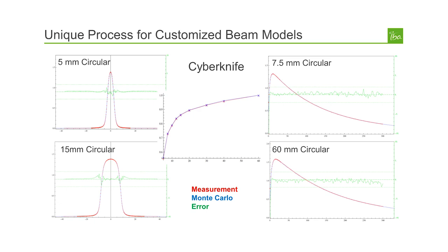To achieve a high level of accuracy in the clinic, it is necessary to customize the beam models of the Monte Carlo code to a particular linear accelerator. We have created a unique process for beam model customization that allows us to achieve very high accuracy in practice. Shown here are water phantom dose measurements for a CyberKnife beam, including depth dose curves for a 7.5 mm and a 60 mm circular field. The red curve is the measurement, the blue curve is the Monte Carlo simulation, and the green curve is the error. We achieve an accuracy of less than 0.5% in the depth dose curves even for these very small field sizes.